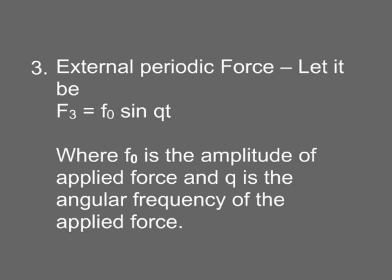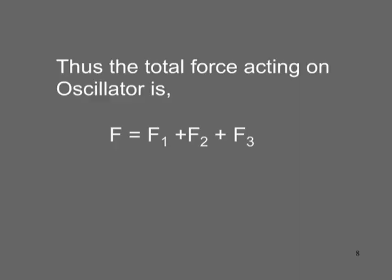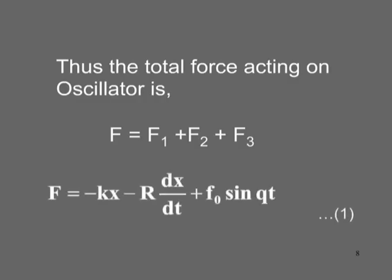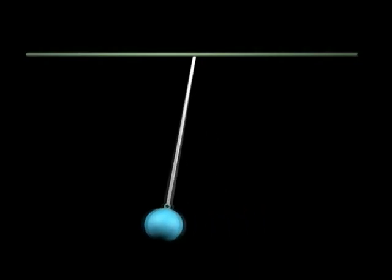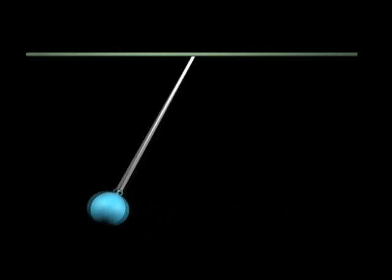Third, the external periodic force: let it be F₃ = F₀ sin(qt), where F₀ is the amplitude of the applied force and q is the angular frequency of the applied force. Thus the total force acting on the oscillator is F = F₁ + F₂ + F₃, so we get F = −kx − r(dx/dt) + F₀ sin(qt). This is equation 1. Due to all these forces, the oscillator is set in motion.